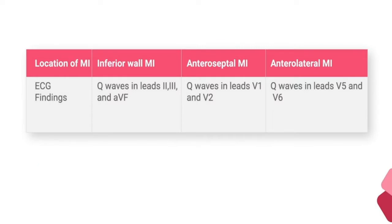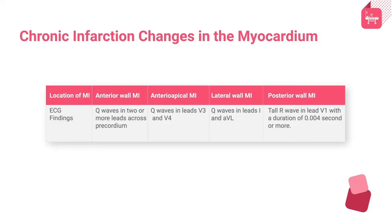This table describes the changes occurring in various regions of the myocardium having an infarction with abnormal Q or R waves. The ECG findings in inferior wall MI show Q waves in leads II, III, and aVF. In anteroseptal MI, Q waves are seen in leads V1 and V2. The anterolateral wall MI shows Q waves in leads V5 and V6. Anterior wall MI shows Q waves in two or more leads across the precordium, and in anteroapical MI, Q waves in leads V3 and V4.